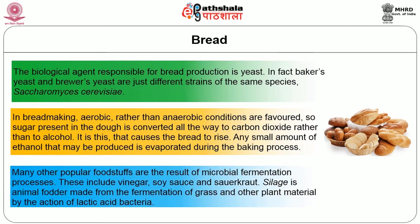Many other popular foodstuffs are the result of microbial fermentation processes. These include vinegar, soy sauce and sauerkraut. Silage is animal fodder made from the fermentation of grass and other plant material by the action of lactic acid bacteria.